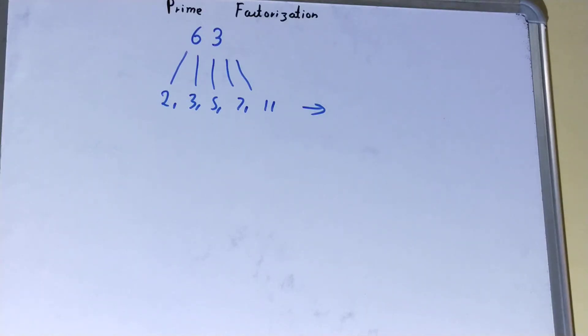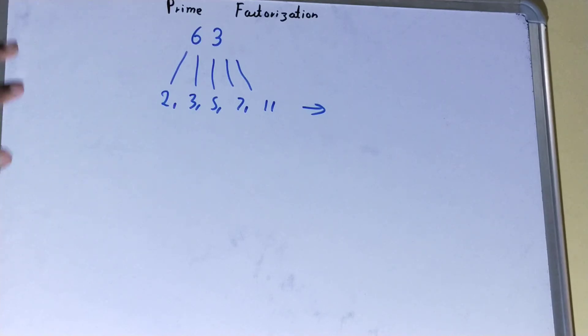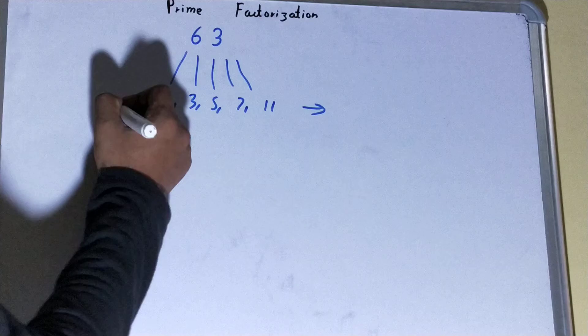So prime numbers have a specialty - that is they are divisible by themselves and one only, right? So the process of dividing or factorizing the number into a set of prime numbers is called as your prime factorization. Now let's quickly prime factorize this 63.